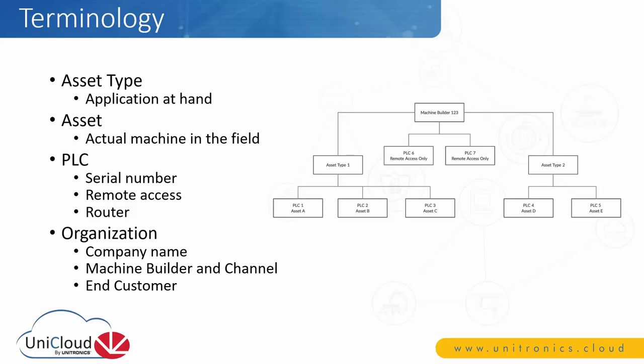Unitronics offers a UCR router that can connect to the internet via a wired connection, Wi-Fi, or a cellular connection. Organizations are groups on the cloud — your company can have an organization with many users and devices. You can add sub-organizations for your machine builders, channels, or end customers, and give them different rights on the dashboard, like view-only, admin-level access, and more.